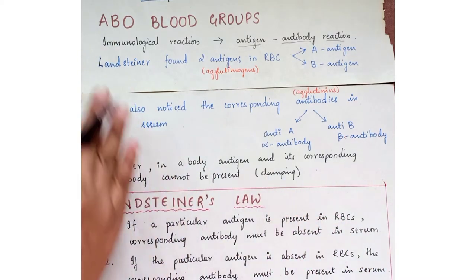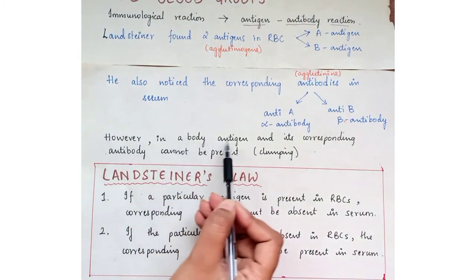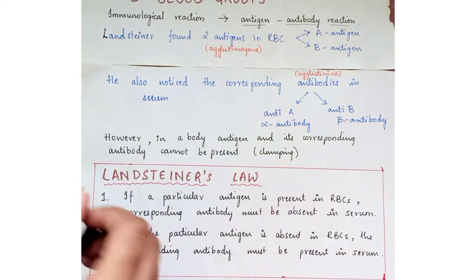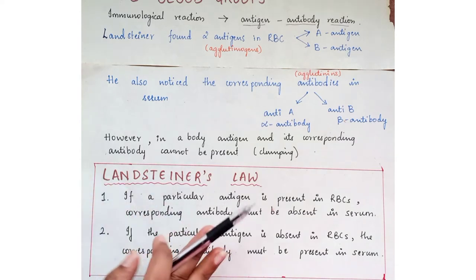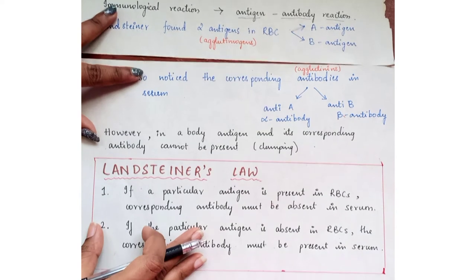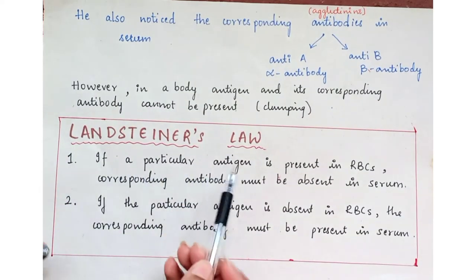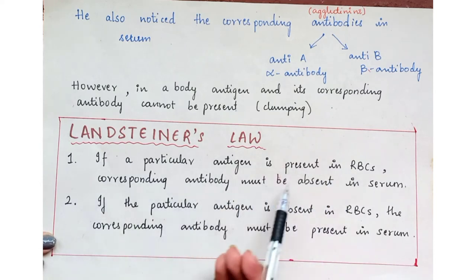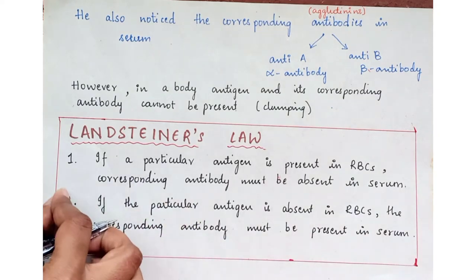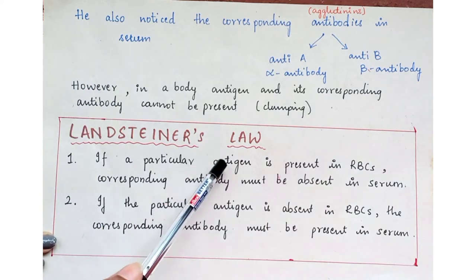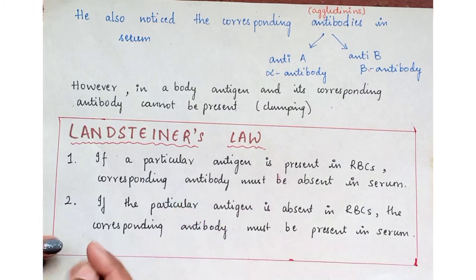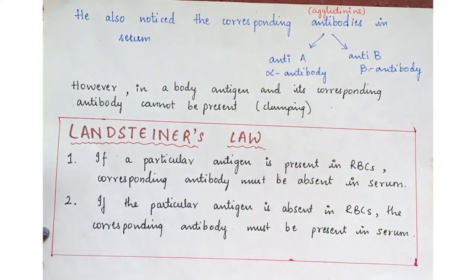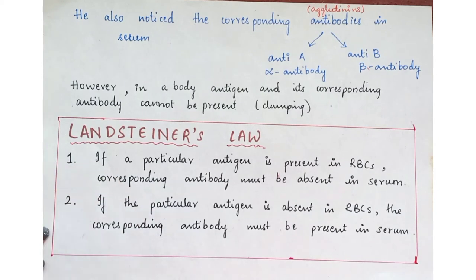If anti-A is present with antigen A, there is clumping. In the body, an antigen and its corresponding antibody cannot be present together — that would result in agglutination. So Landsteiner's Law 1 states: if a particular antigen is present in RBCs, its corresponding antibody must be absent in serum. Law 2 states: if a particular antigen is absent in RBCs, the corresponding antibody must be present in serum. Note that Law 2 is not applicable in the case of the RH factor.